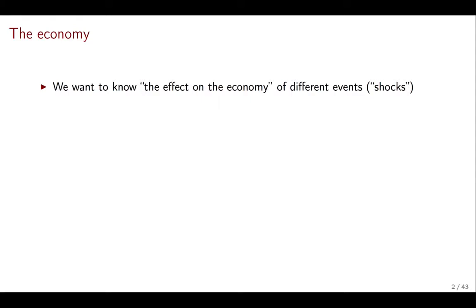First let's talk a little bit more generally about the model setup before we go into the details of how the different agents in the economy behave. The objective here is to know the effect on the economy of different events — these are the shocks: a productivity shock, a change in the preference of people that makes them want to consume more or save more, a change in the behavior of government, perhaps cutting taxes or increasing spending. There are many different events that can affect the economy, and we want to know the effect of these events. But what is an economy?